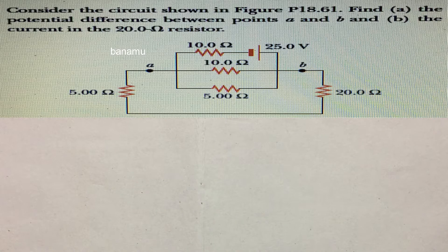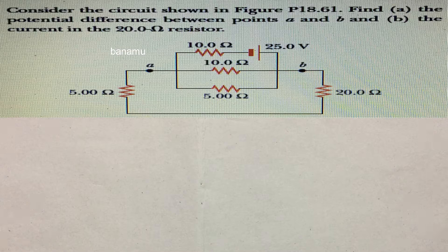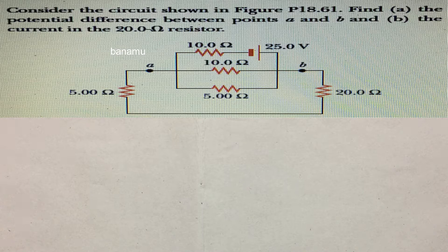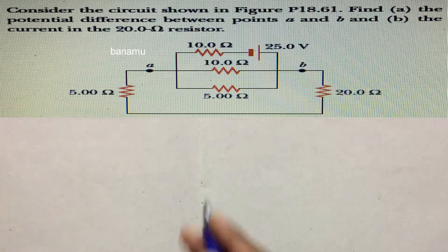Consider the circuit shown in the figure. Find part A: the potential difference between points A and B, and part B: the current in the 20 ohm resistor. Draw the figure.